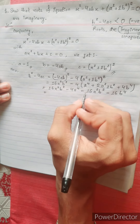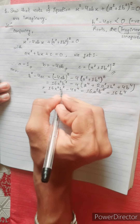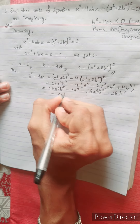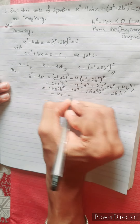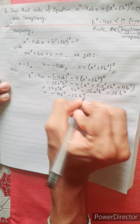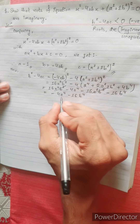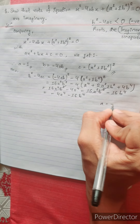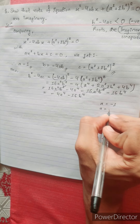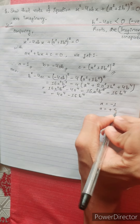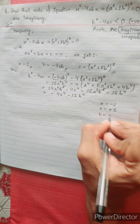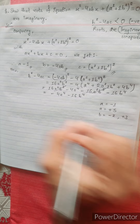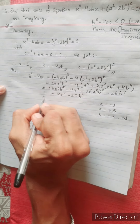Simplifying: we have 16a squared b squared minus 4a to the power 4 minus 16b to the power 4. Taking minus 4 as common: if a term is negative and another positive, the overall result is negative.